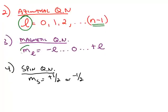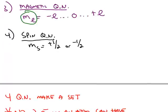The quantum number m sub l is dependent on l. It ranges from negative l up to 0 up to positive l in integer increments. The last variable is called the spin quantum number m sub s, and this can either be plus 1 half or minus 1 half.